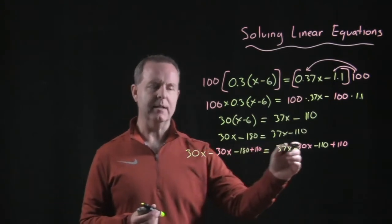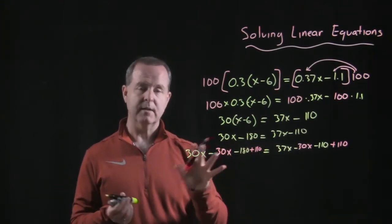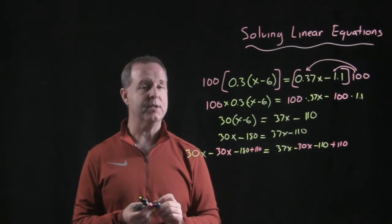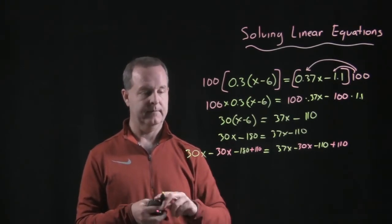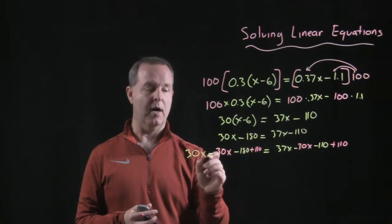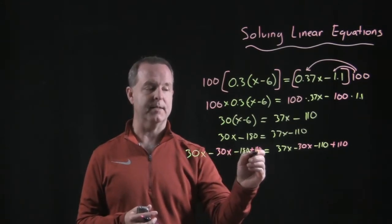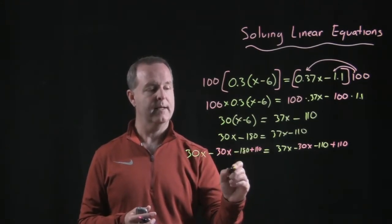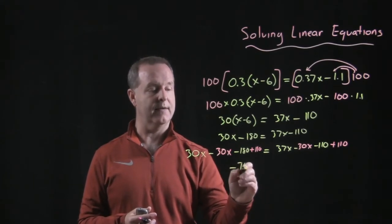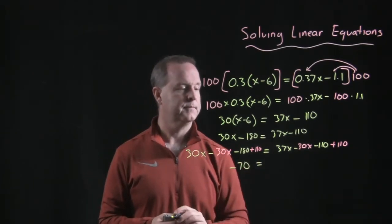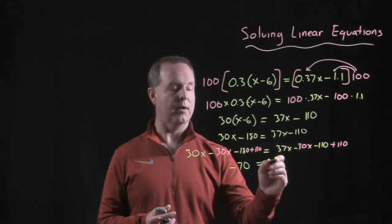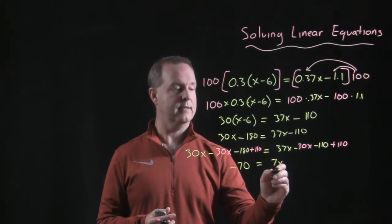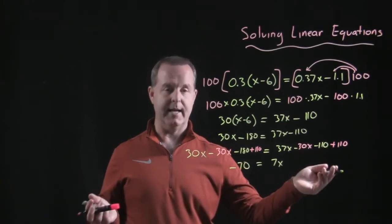For some of you this might be a little confusing. For others, if you want to do that, you have my permission to do both at the same time. Let's clean it up and see what we have. X's are gone from this side. I have negative 180 plus 110 remaining that produces negative 70. Left with 37x minus 30x, which is 7x, minus 110 plus 110, gone.